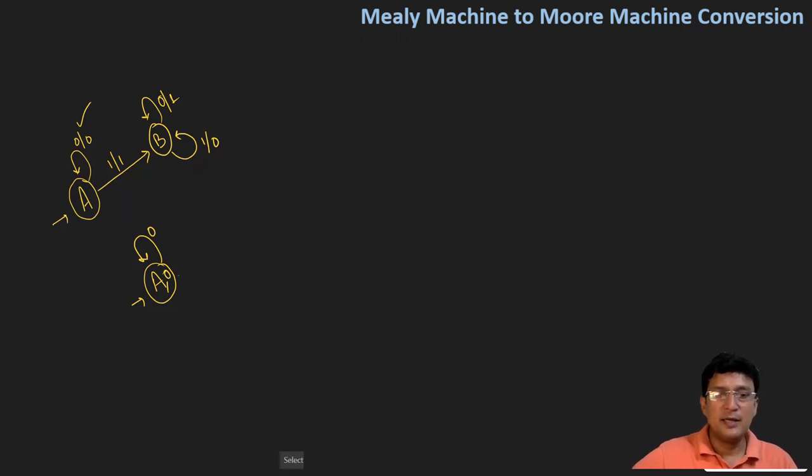On state B, you can see there is one transition with output 1, another transition with output 1, and one transition with output 0. We will have to convert this state B into two different states: B and B dash. Let's say B state has output 0 and B dash state has output 1, or vice versa - B state has output 1 and B dash state has output 0.